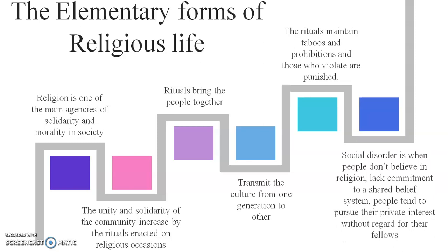Social disorder happens in society when people don't believe in religion, when there is a lack of commitment to a shared belief system, and when people pursue their private interests without regard for others. According to Durkheim, when people follow religion, share a common belief system, and come together, there will be unity and solidarity in society. That concludes today's discussion on Durkheim's major contributions to sociology.